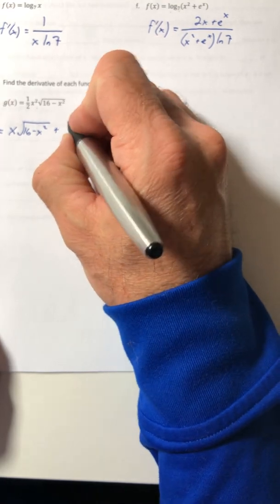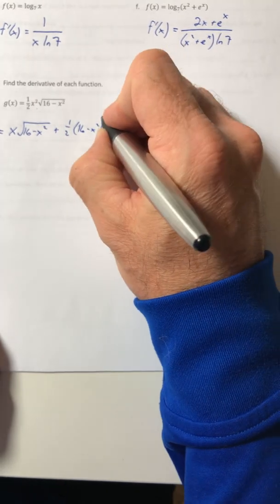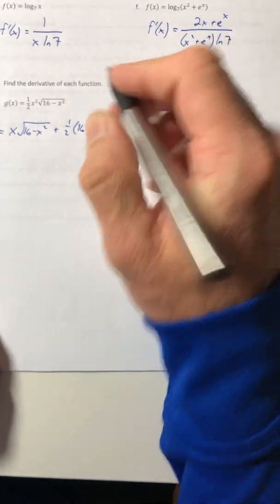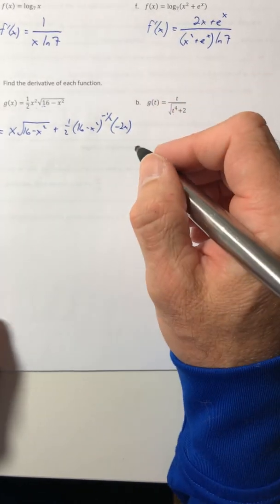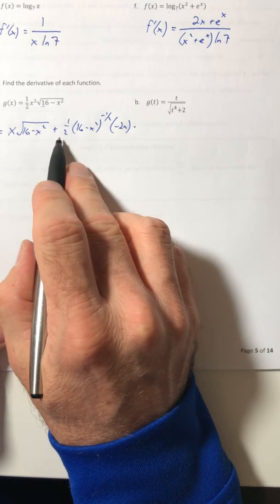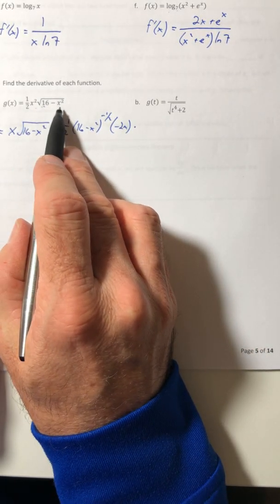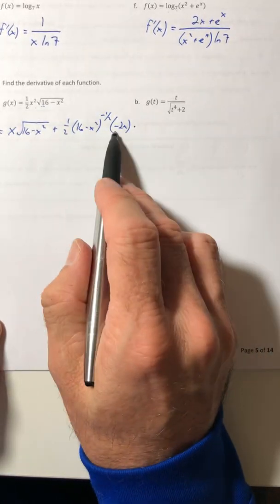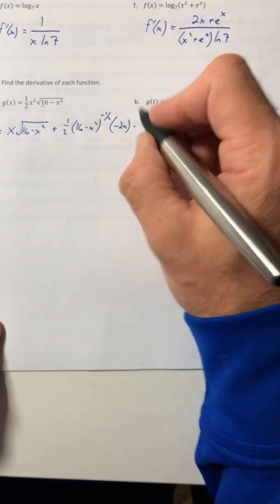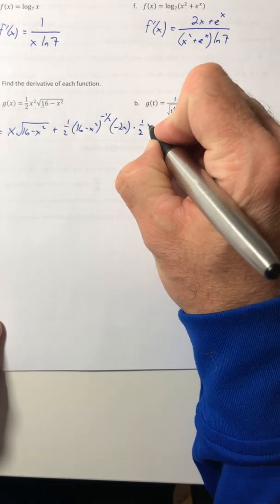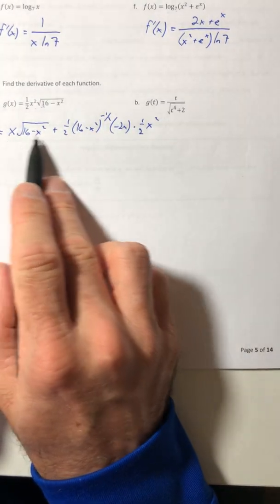So the power pulls down, decrease it by one, then multiply by the derivative of the inside. So that right there, this is just the derivative of root 16 minus x squared. So now I have to finish out the product rule by multiplying by whatever was the front term, which was your one half x squared. So there's the calculus.